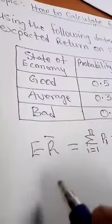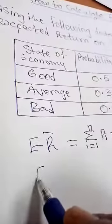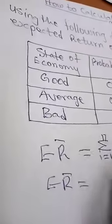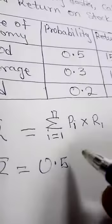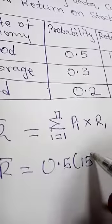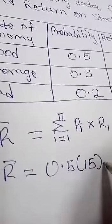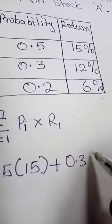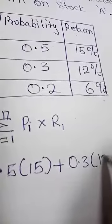The expected return will simply be 0.5 multiplied by 15 for the first one plus 0.3 multiplied by 12